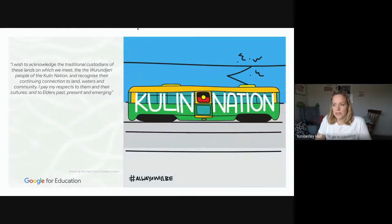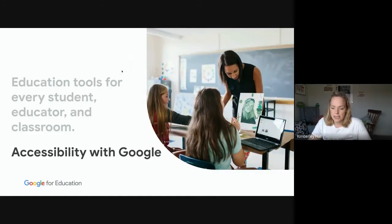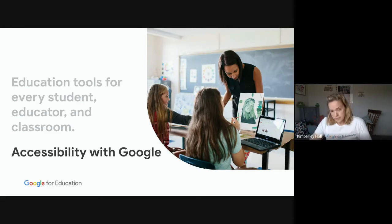Before I kick off, I want to acknowledge the traditional custodians of the lands on which I am — the Wurundjeri people of the Kulin Nation — and recognize their continuing connection to the land, paying my respects to their past, present and emerging elders. Accessibility with Google is a really important part of what we do, even in our mission statement: to take the world's information and make it universally accessible and useful for everyone. When we talk about accessibility in education, we want to make sure it's for every student, every educator and every classroom.